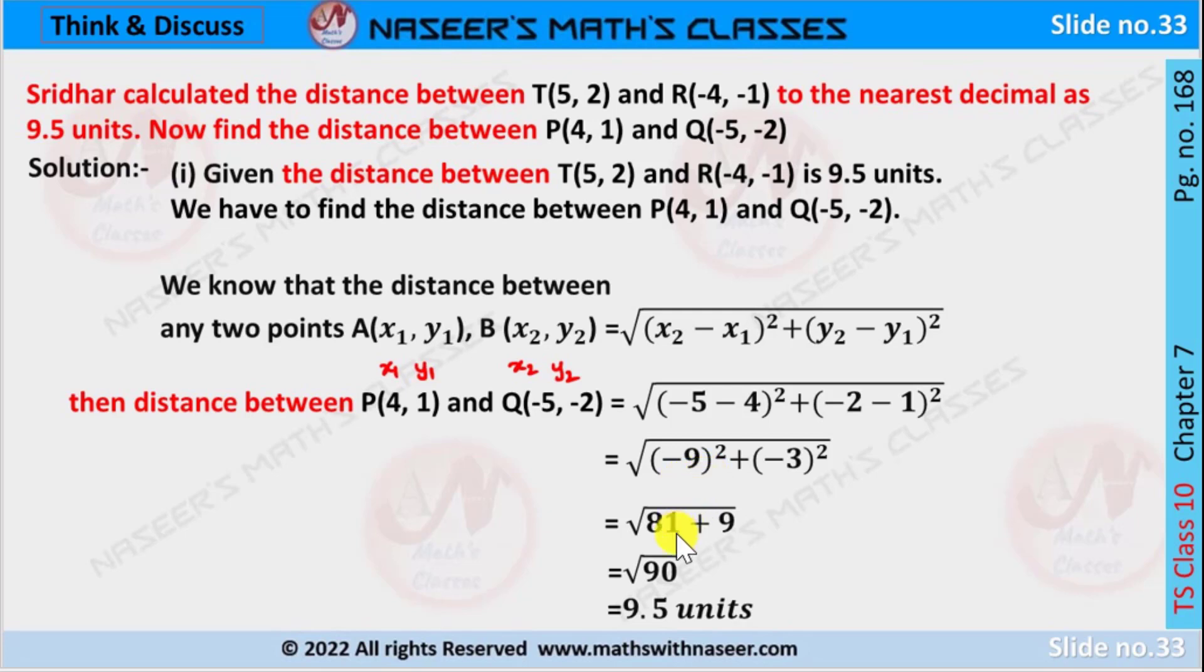Here (-9)² is written as 81, and (-3)² is written as 9. 81 plus 9 is 90. Therefore we get square root of 90. After finding the square root of 90, we get 9.5 units.